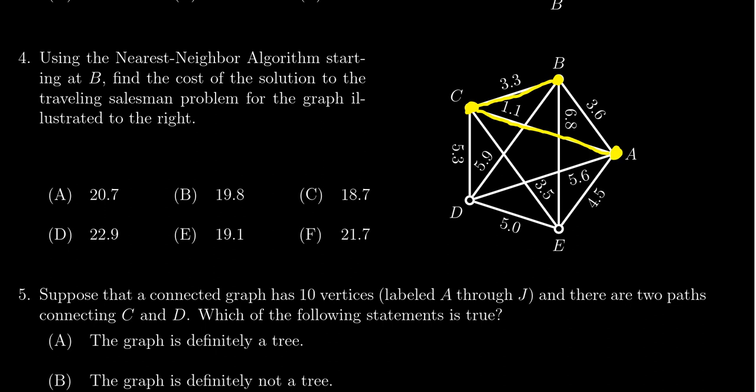Now be aware that we can't go back to B yet because that would make a premature circuit. So we're just going to remove that number from consideration so we don't accidentally be tempted by it, because honestly 3.6 is the next cheapest one for A here, but we can't go back there.